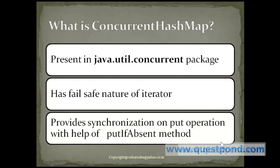It has a fail-safe nature of iterator, which was lacking in other collections like hashtable. Concurrent hashmap also provides us with a synchronized map, which offers better performance as compared to the earlier synchronized hashmap or hashtable.